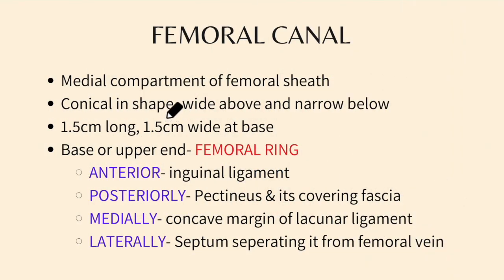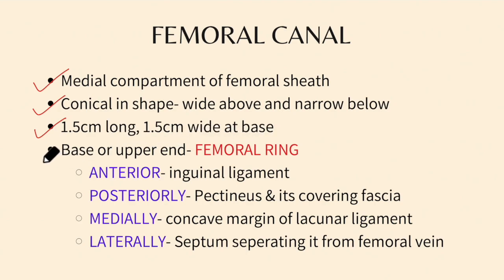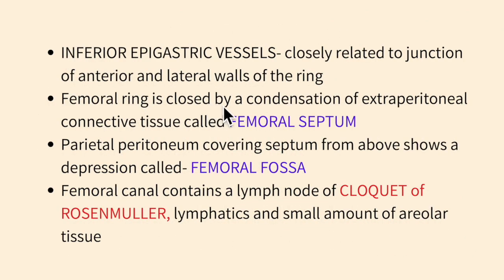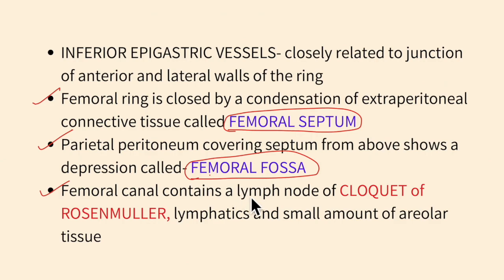To summarize the femoral canal: it is the medial compartment of the femoral sheath, conical in shape, 1.5 cm long and 1.5 cm wide at the base. The upper end is the femoral ring, bounded anteriorly by the inguinal ligament, posteriorly by the pectineus and its fascia, medially by the lacunar ligament, and laterally by the septum from the femoral vein. The ring is closed by the femoral septum, the peritoneum above shows the femoral fossa, and the canal contains the lymph node of Cloquet or Rosenmüller along with lymphatics and areolar tissue.